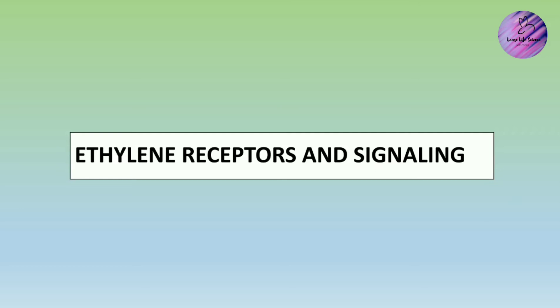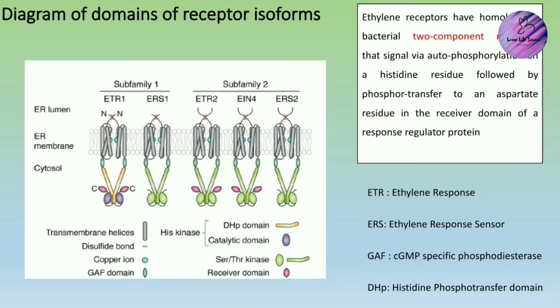Now we are going to deal with ethylene receptors and signaling. There are generally five different isoforms of ethylene receptors. Before getting into that, you should know that the ethylene signaling process involves a two-component histidine system — you might know about the two-component system that occurs in bacteria, and the same signaling process is followed here.